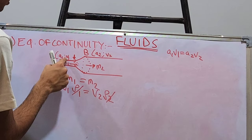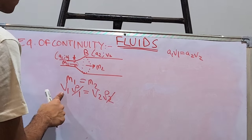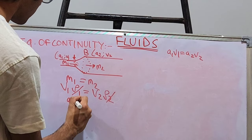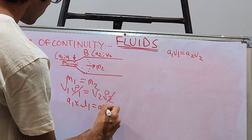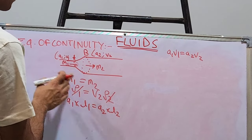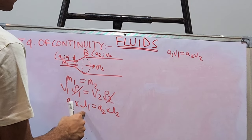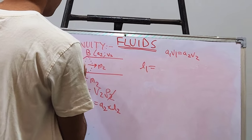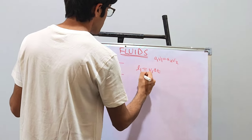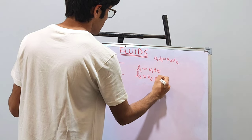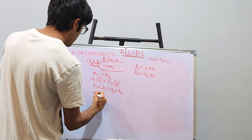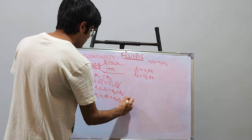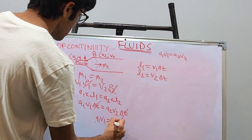Volume is equal to area of cross section into length. So A1·L1 = A2·L2. L1 is the distance the fluid travels through that cross section, and distance equals speed into time, so L1 = V1·Δt and L2 = V2·Δt. Plugging in: A1·V1·Δt = A2·V2·Δt. The time cancels out and we get our equation of continuity: A1 V1 = A2 V2.